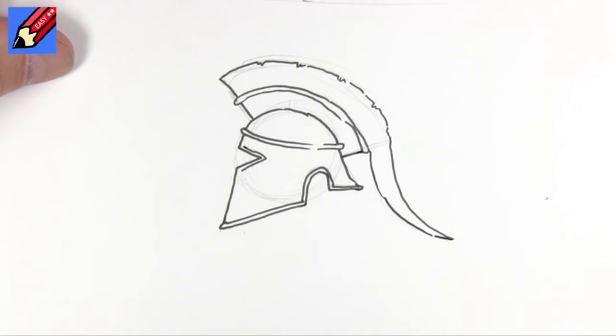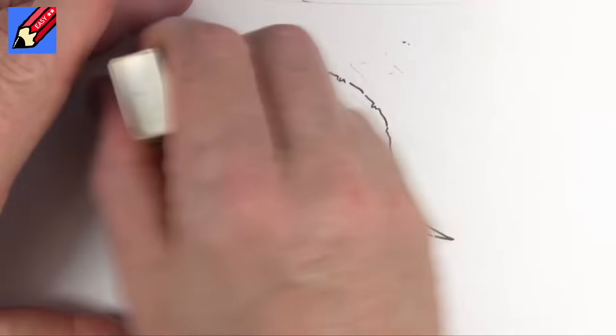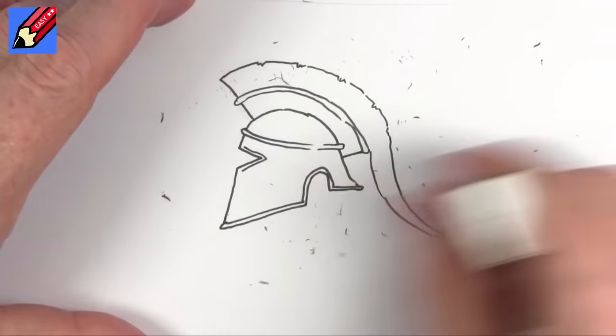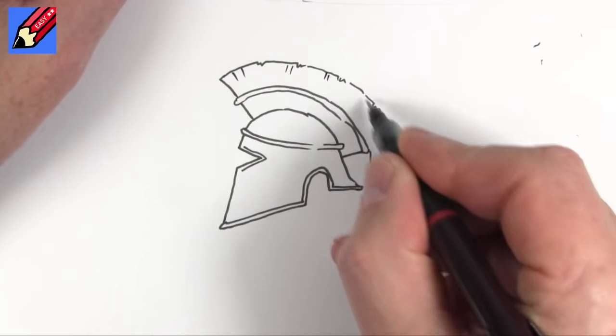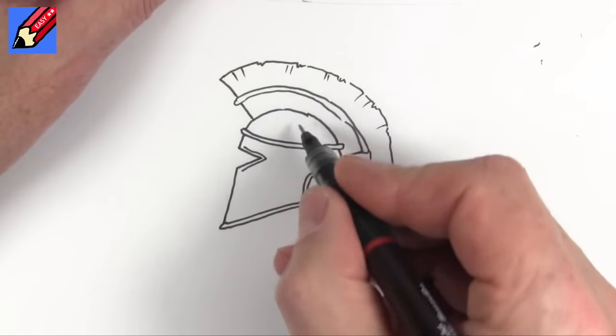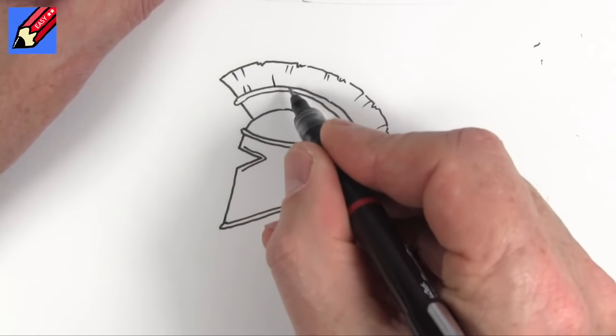When you are absolutely sure that the ink is dry, then you can erase all those pencil lines. We can put in some of these brush feathery kind of lines like this, and from here pointing up as well like that.